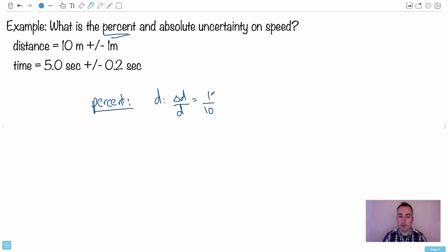Now to do the percent uncertainty, I have to take that and multiply it by 100. So what I do, I move my decimal over by 2, and I end up with a percent uncertainty of 10% on the distance only.